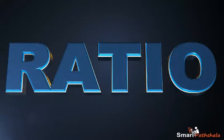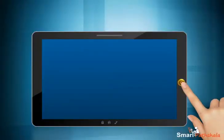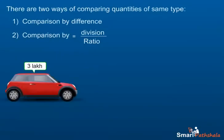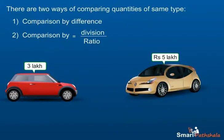This module will explain the basics of ratio. The cost of car A is rupees three lakhs and cost of car B is rupees five lakhs. We can compare the cost of both cars and say that car B is costlier by two lakhs.